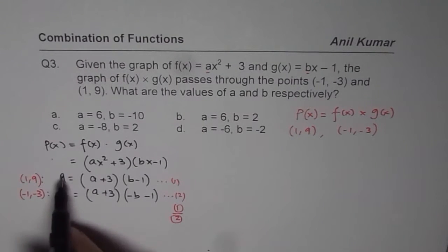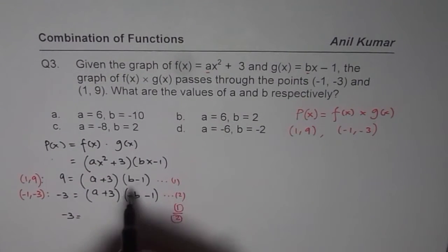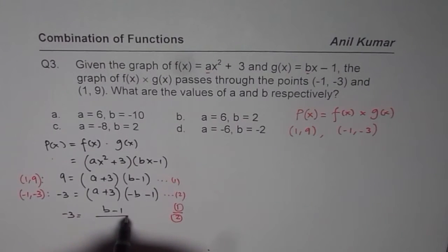So, when I divide, what do I get? 9 divided by minus 3 is minus 3. A plus 3, a plus 3 cancel out and we get b minus 1 divided by minus b minus 1.